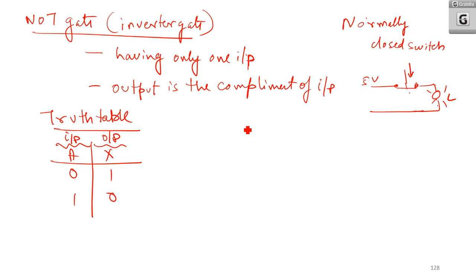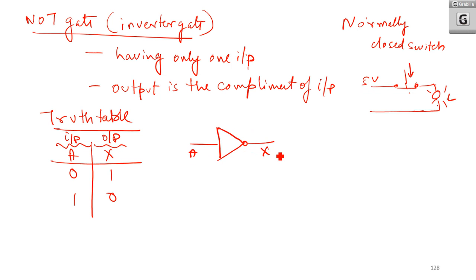Now how to represent this NOT gate? We can represent a NOT gate like this: you have a triangle with a circle at the output. So we can write S is equal to A complement, or the complement of A.